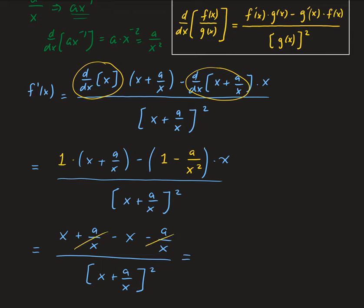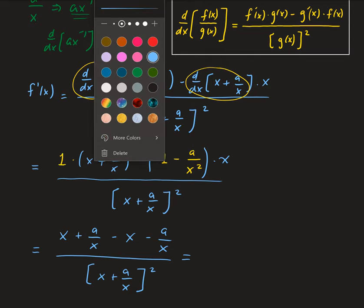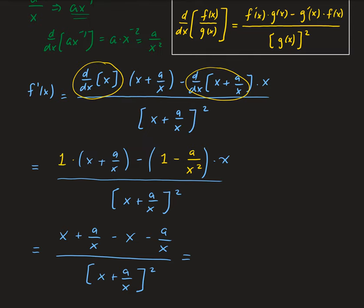We have a positive here because we have a negative times a negative, so that gives us a positive. The x's cancel out, and that leaves us with 2a over x, so 2a over x, all divided by x plus a over x squared.